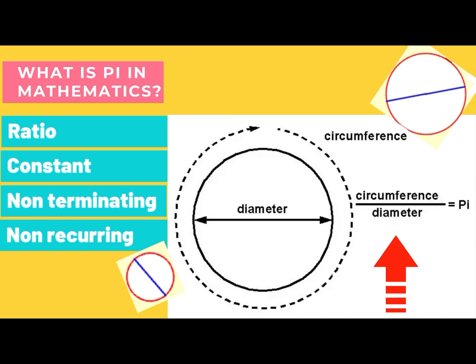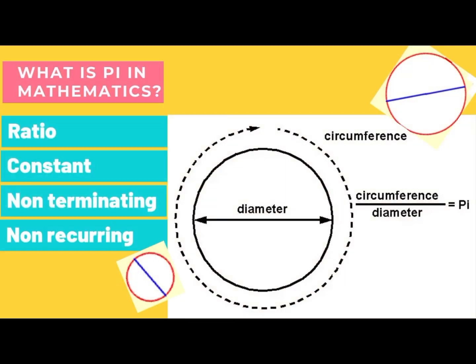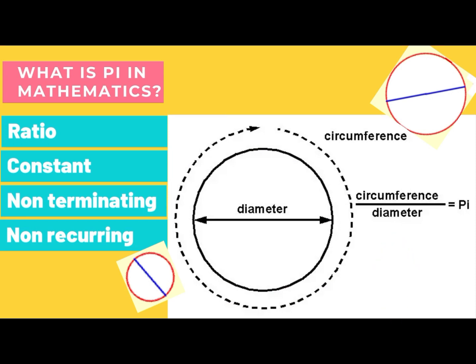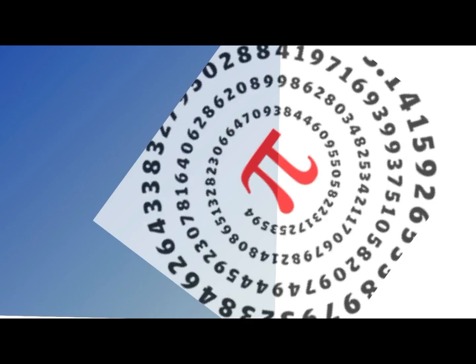For any circle of any size across the world, the ratio of circumference and diameter is always the same. This value of ratio is a non-terminating — means never-ending — and non-recurring decimal, and this value is indicated as Pi.